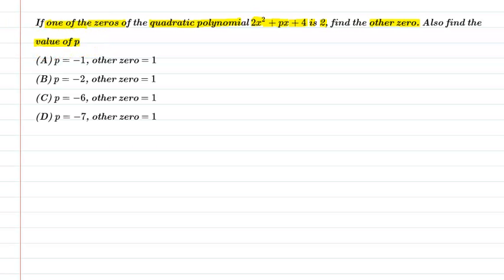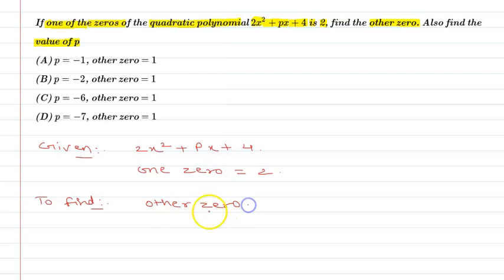So let's start. The question is given a quadratic polynomial 2x² + px + 4, and given that one zero is 2, then we have to find the other zero and the value of p.